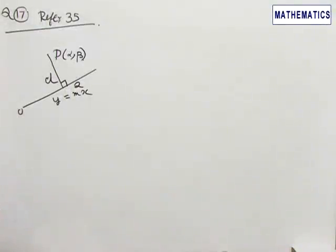Number 17, refer to problem number 37. P is the point alpha comma beta. D is the distance of P from any straight line passing through the origin.